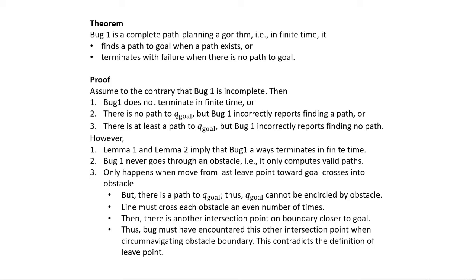But we assumed there is a path to the goal, so Q_goal cannot be encircled by an obstacle. We also know the direct line from a hit point to the goal crosses an obstacle an even number of times. If it crosses an even number of times, there must be another intersection point closer to the goal — but the bug must have encountered that point while circumnavigating, which contradicts the definition of leave points. So the third contradiction case doesn't hold either, and we have proven that Bug 1 is a complete path planner.